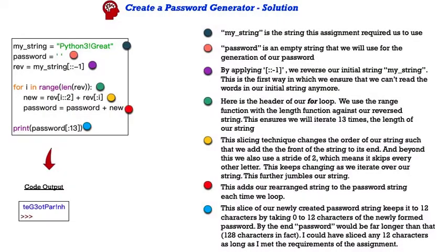So how did you do? Did you get it? Well, if not, here is my solution. So we start at the top with this greenish blue dot. My string is the string this assignment required us to use. Next, we have password as an empty string. We'll use that for the generation of our password. In the next line with the purple dot, I apply a slice to reverse our initial string, my string. This is the first way in which we'll ensure that we can't read the words in our initial string anymore.